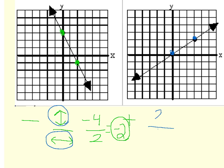So the numerator is up 2, the denominator represents to the right 3. So the second line has a slope of a positive 2 thirds.